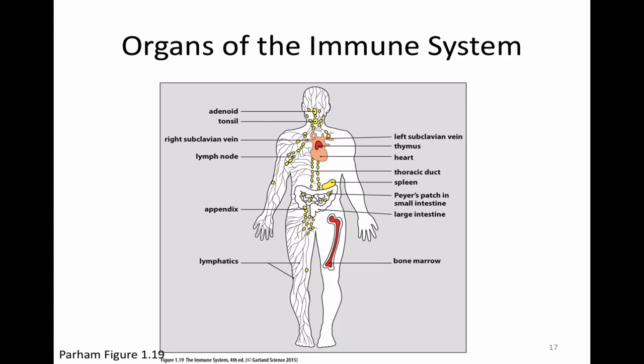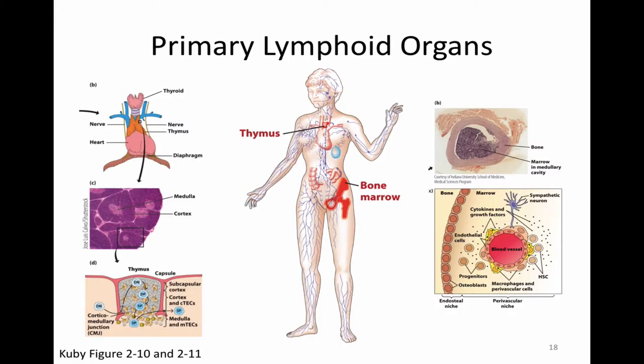Primary lymphoid organs are on this slide in red. There are only two primary lymphoid organs: the thymus and the bone marrow. The bone marrow is the important stuff inside your bones. The thymus is an additional organ that sits on top of the heart — it is not the thyroid, which is higher. People love to confuse those. Primary lymphoid organs have an important job: they are the places where white blood cells develop. This is where hematopoiesis occurs. All of those stem cells come from the bone marrow and do some developmental steps there.